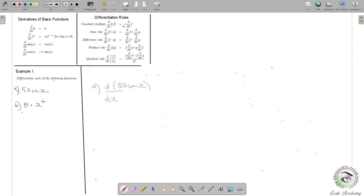To choose the correct rule, let's examine the given function. It is constructed by multiplying the basic function sin(x) by constant 5. Therefore we should use the constant multiple rule.